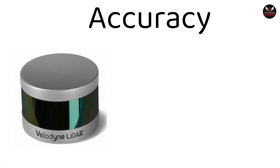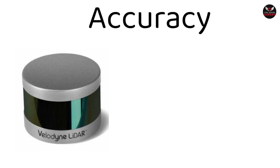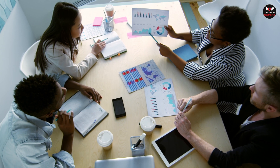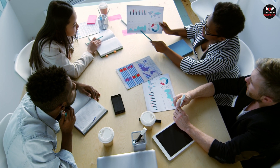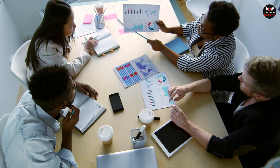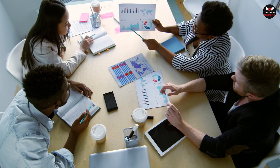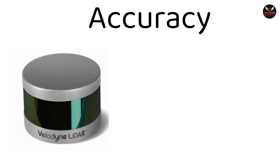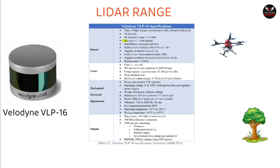Let's come to accuracy. The objective of using a LiDAR sensor is high accuracy. Therefore, it is important to check the accuracy of a sensor before selection. For example, the Velodyne VLP-16 has an accuracy of ±3cm mentioned in the specification, which falls into the category of high accuracy.